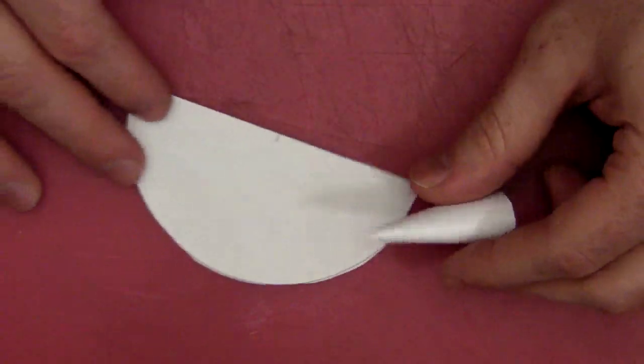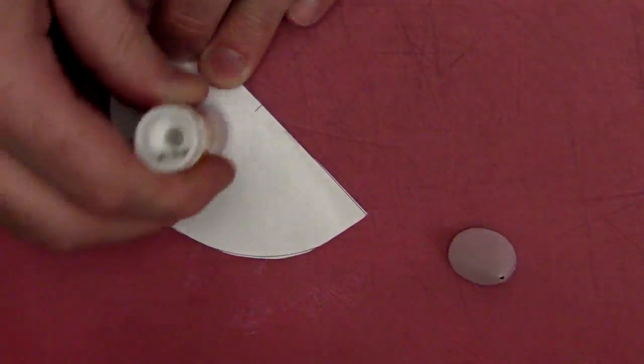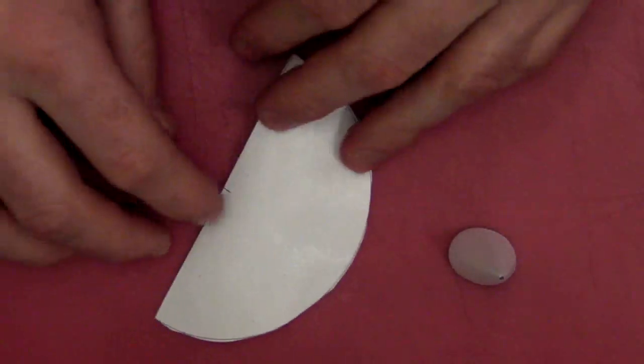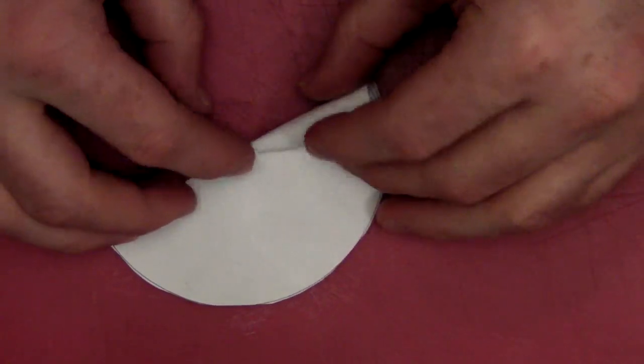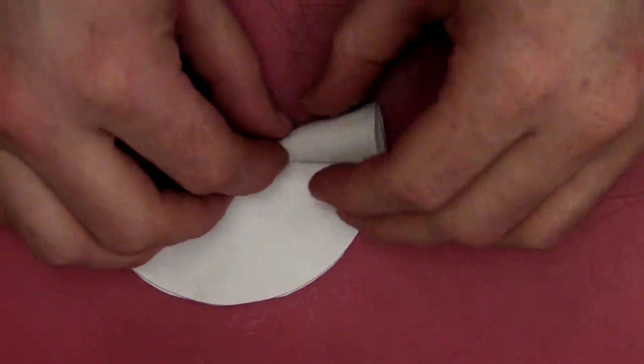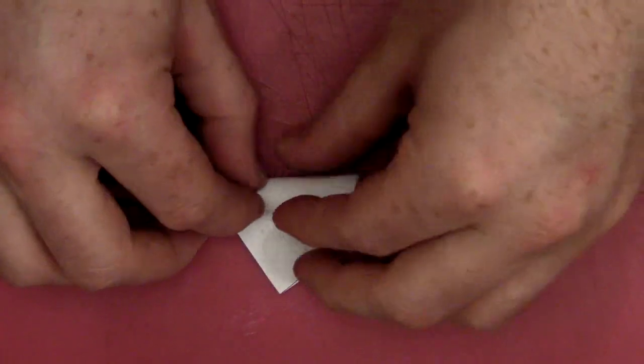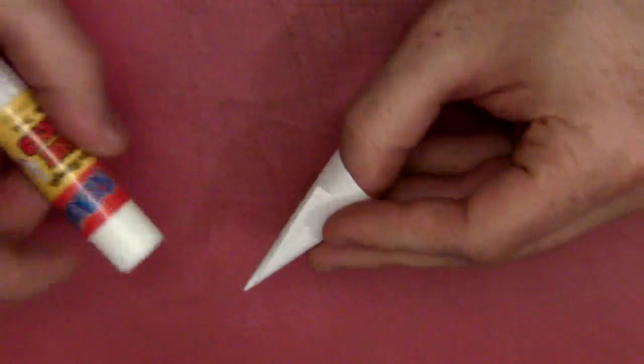I'll take the second half of my circle and we'll put some glue on this and then I'm going to put the cone onto here and then I'm just going to continue rolling till I get to the end.